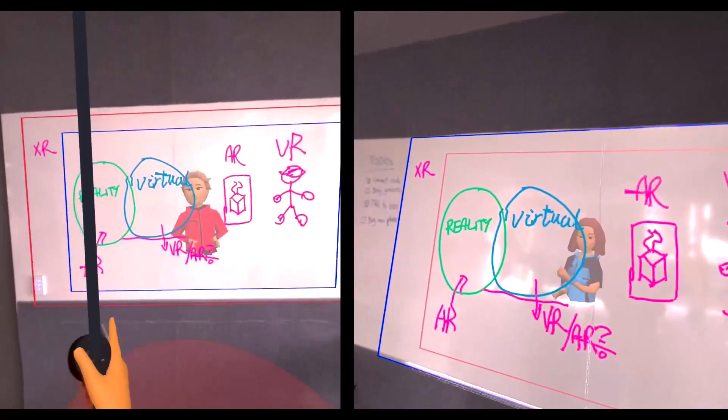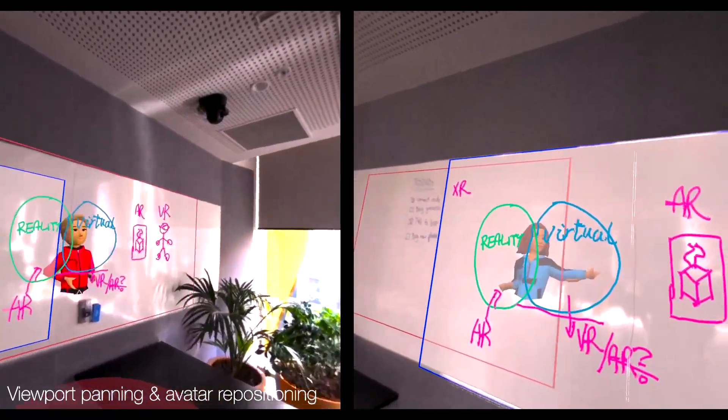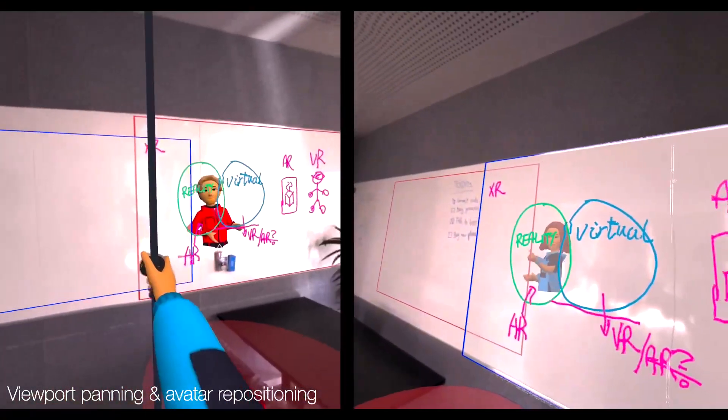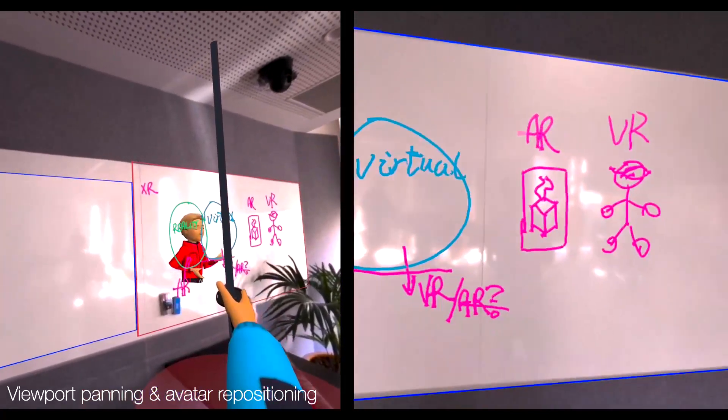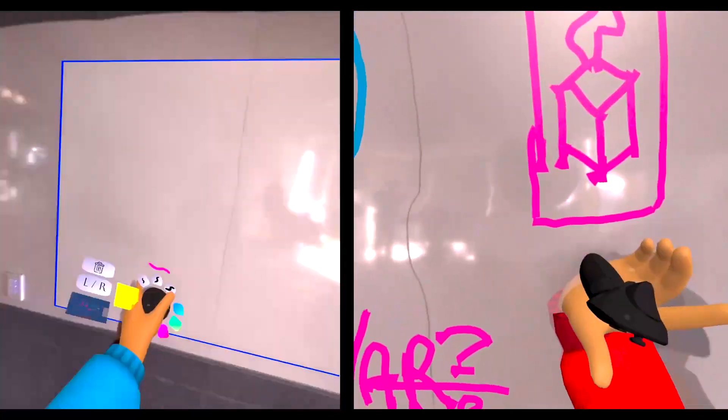To do so, Alice can pan her viewport. This does not affect Bob's content view, but instead it increases distance between their avatars, allowing them to work on independent surfaces.